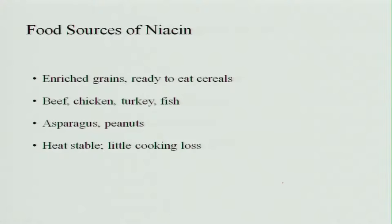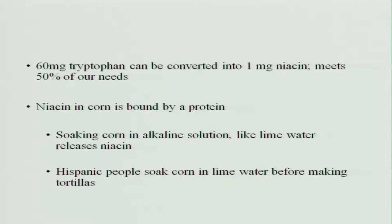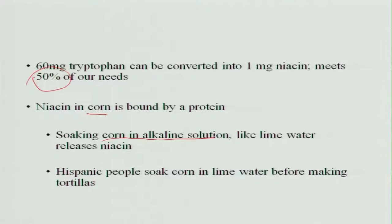Food sources of niacin include enriched grains, ready-to-eat cereals, beef, chicken, turkey, fish, asparagus, and peanuts. Niacin is heat stable, so very little cooking loss occurs. 60 mg of tryptophan can be converted into 1 mg of niacin, meeting about 50 percent of our needs with a proper protein diet. Niacin in corn is bound by protein and not available, but soaking corn in an alkaline solution like lime water will release the niacin.